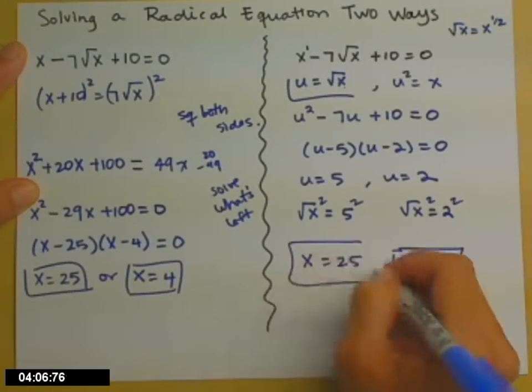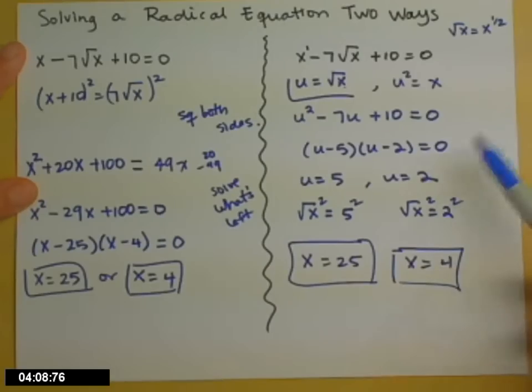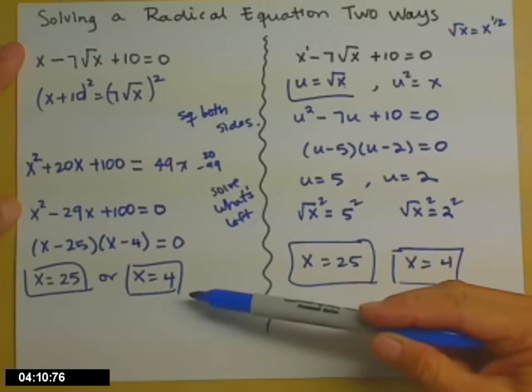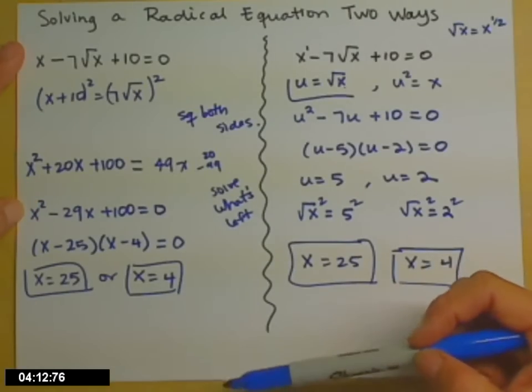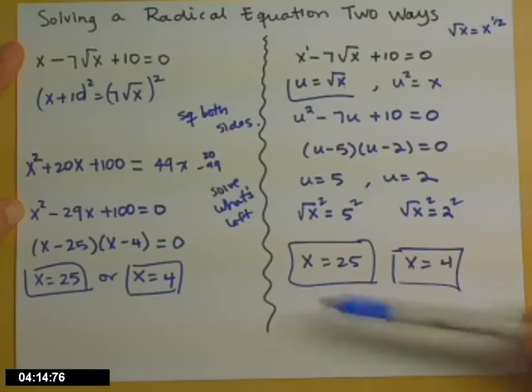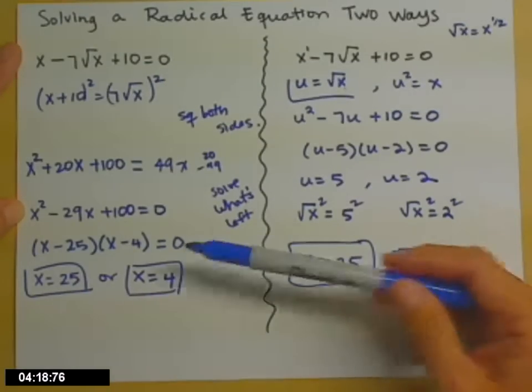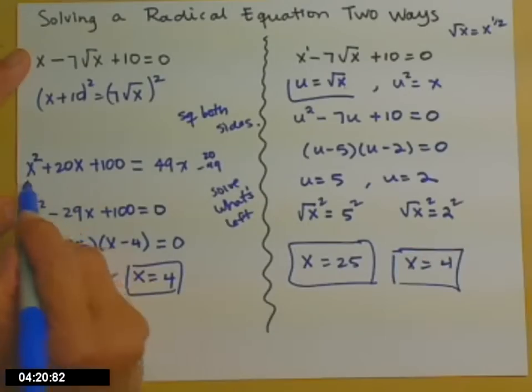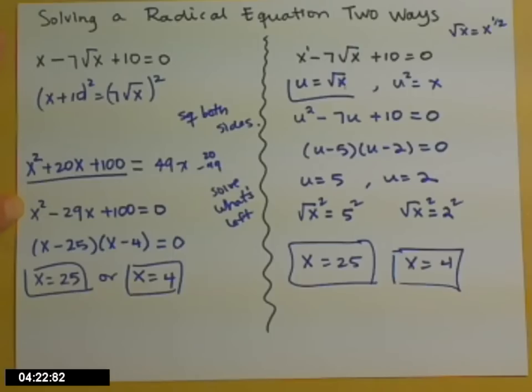So you might be thinking, well, that wasn't a whole lot easier than what we did before. Probably not yet, but the places to make mistakes are a lot less over here than they are over here. This expanding the binomial seems to be a huge issue for a lot of people. And also you have bigger numbers to work with when you're factoring.